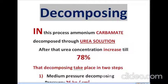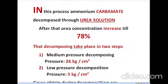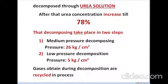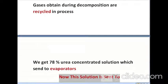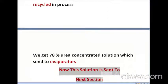In the decomposing section, decomposition of ammonium carbamate takes place, and the concentration of urea increases from 32 percent to 78 percent. This decomposition occurs in two stages at two different pressures: the first stage uses medium pressure of 26 kg per centimeter square, and the second stage uses a separate decomposer at 5 kg per centimeter square. Gases obtained during decomposition are recycled, and we get 78 percent pure urea, which is then sent to the evaporators.